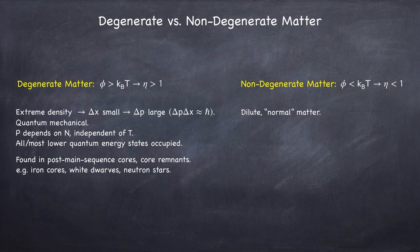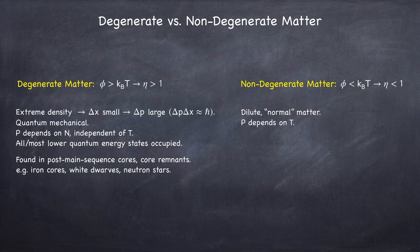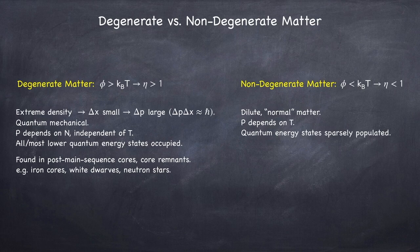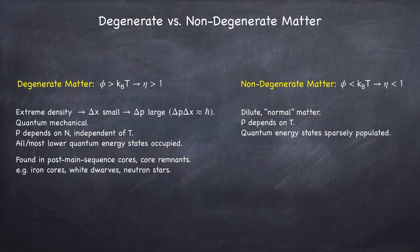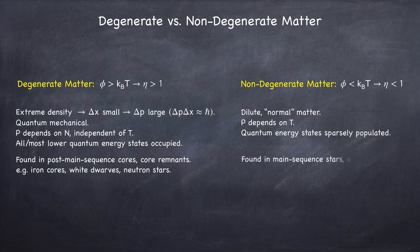In this case, the pressure does depend on the temperature. And the quantum energy states are sparsely populated. And often, the lower energy states may not be populated at all. Non-degenerate matter is found in main-sequence stars, and pretty much everywhere else.